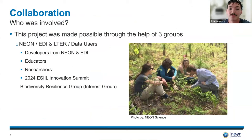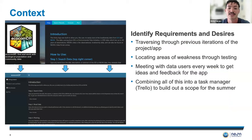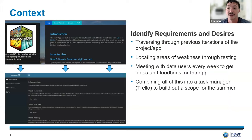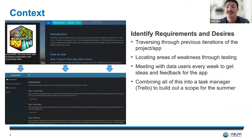The project was made possible through the help of three different groups: developers at NEON and EDI, and data users including educators, researchers, and an interest group from the 2024 ESIP Innovation Summit, helping me identify different requirements for the project. We went through different iterations of what the app looked like throughout various past development cycles, identifying areas of weakness through testing. I met with those data users every week to get ideas and feedback, then combined all of that into a task manager — I used Trello — to help build out a scope for the summer.